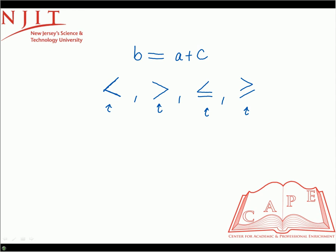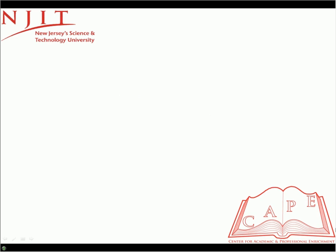With the third and fourth symbols, it's always an 'or' condition — you have either option. If either option is met by the statement, then the inequality can be considered true. Let's look at a couple of examples showing inequalities with real numbers.